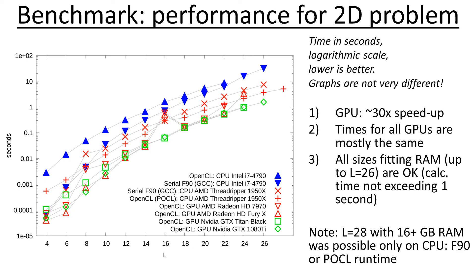This is the benchmark results for the two-dimensional system. System size which fits the memory can be up to 26, and we also have lattice size 28. The graph points are the time in seconds to calculate one step, in logarithmic scale — lower is better. Main facts: first, graphical accelerators show decent speedup over CPU, approximately 30 times as expected. Second, times for all our GPUs are mostly the same, which proves that in this problem only memory bandwidth is important, and the single-threaded Fortran version is not very slow. Third, all system sizes which fit the memory are okay — the calculation time does not exceed one second, so they can be simulated in our research.